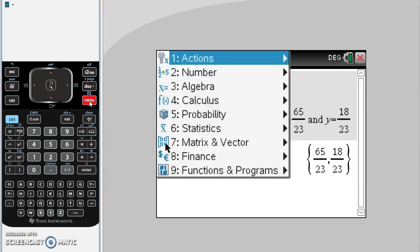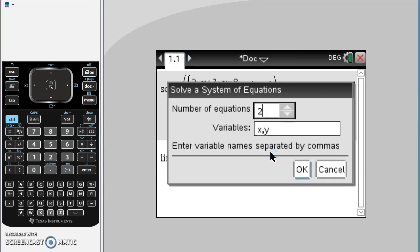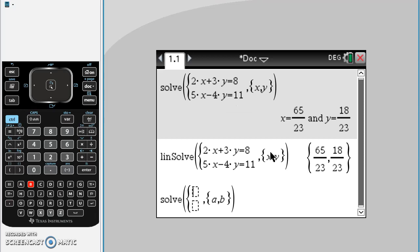If we were to do that, solve systems of equations, we just change our letters, say a and b, and then we can write our equation for that. So 2a plus 3b equals 8 and 5a minus 4b equals 11. We have our answers for that.